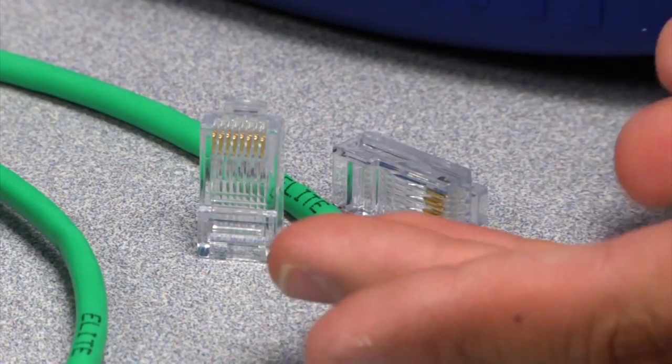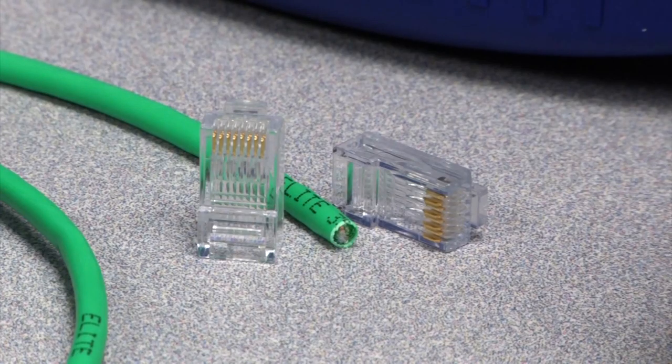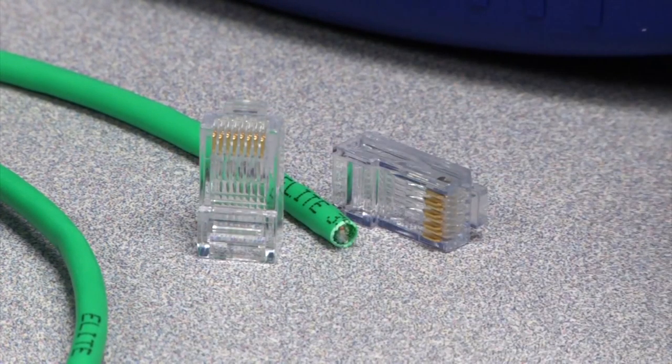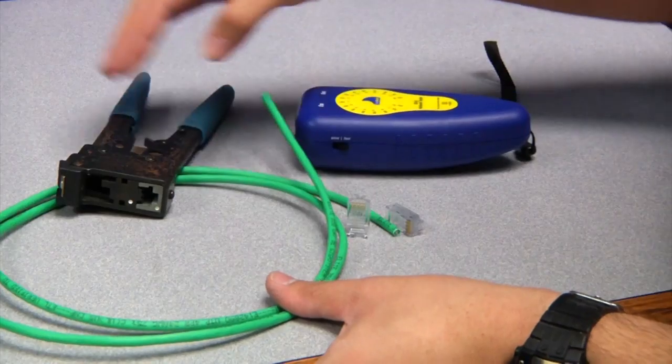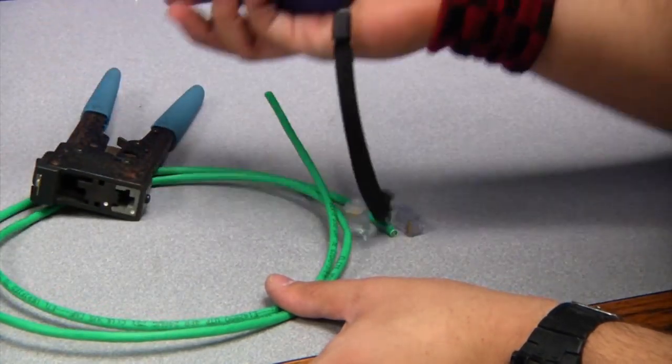Hi, I'm Chris, and I'm going to be showing you how to terminate Cat5 cable. You're going to need two connectors, at least two. If you mess up, you're going to need more than two. And then we're also going to need some cable, because you can't make cable without the cable. You're also going to need crimpers and a test kit.